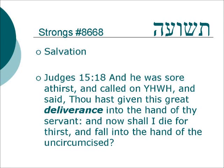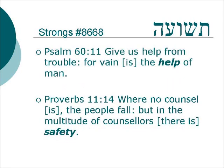Another form begins with a Tav — Teshua. Judges 15:18: 'And he was sore of thirst. And he called on Yahweh and said, Thou hast given this great deliverance through the hand of thy servant, and now shall I die for thirst and fall into the hand of the uncircumcised.' A story about Samson. Some other translations for Teshua: Psalm 60:11: 'Give us help from trouble, for vain is the help of man.' Proverbs 11:14: 'Where no counsel is, the people fall, but in the multitude of counselors there is safety.'